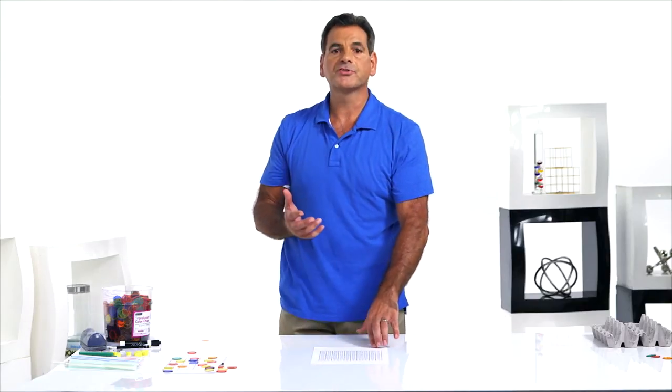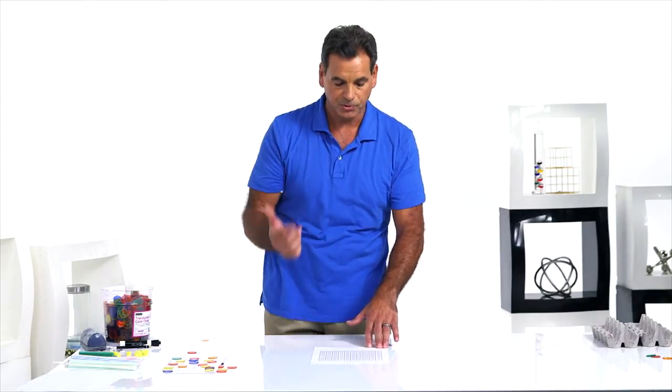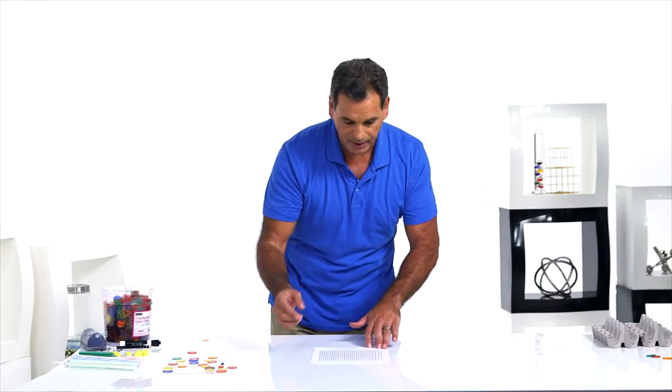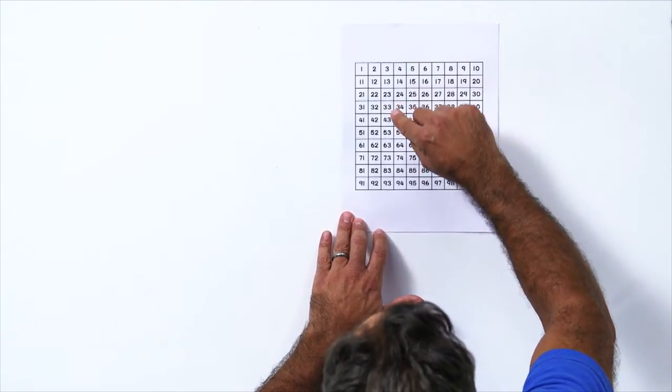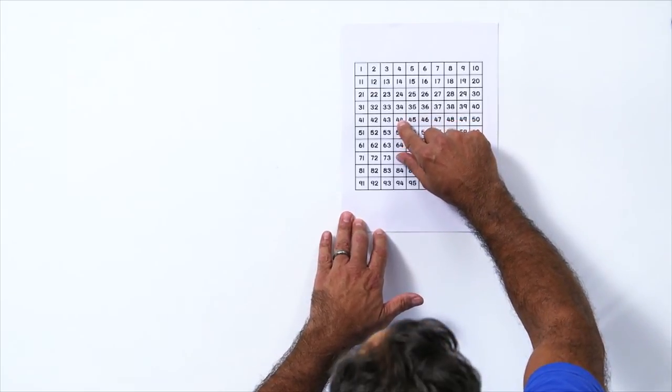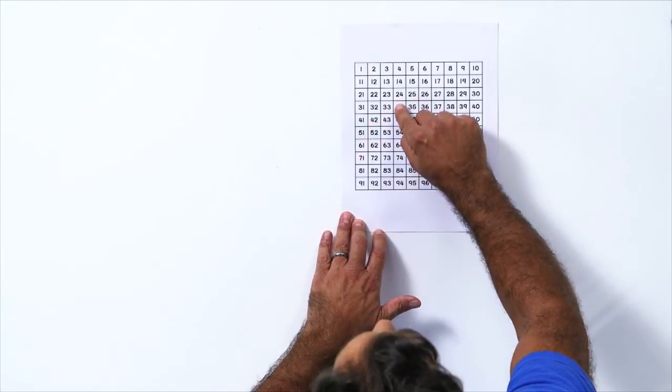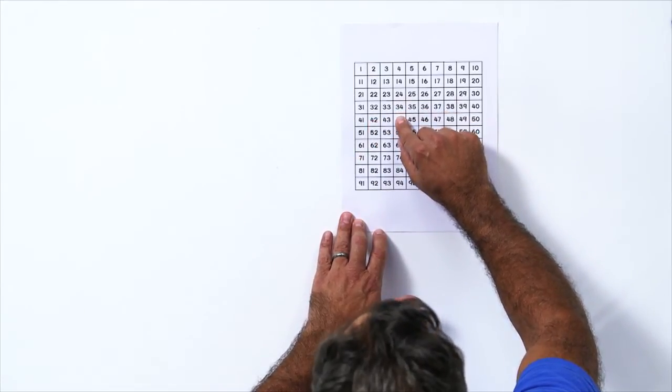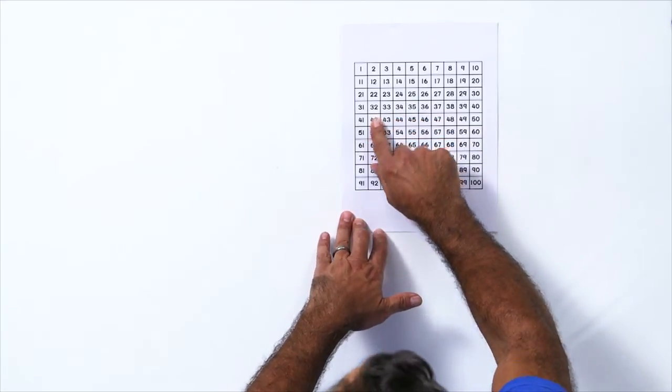We can also do 34 plus 8 on the hundreds chart using tens. This is cool. Let's look at 34 plus 8. 34 plus 8, instead of counting 8, let's count 10. That gets us to 44. We know 8 is 2 less than 10. Let's go 2 back. 43, 42. 34 plus 10 gets us to 44. 2 back gets us to 42. 34 plus 8 is 42.